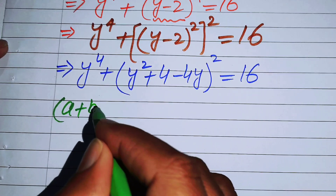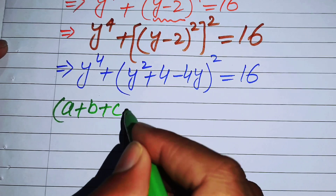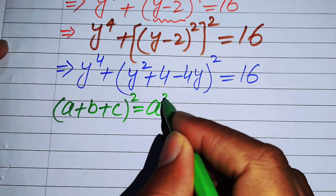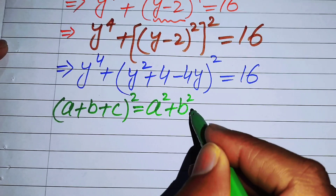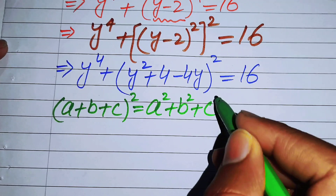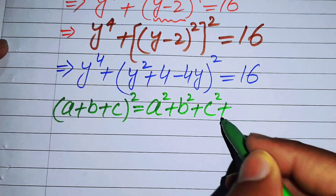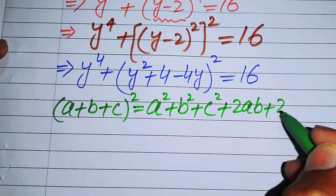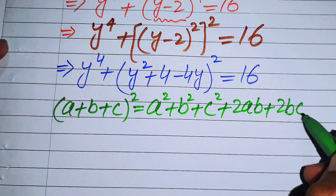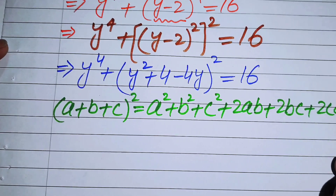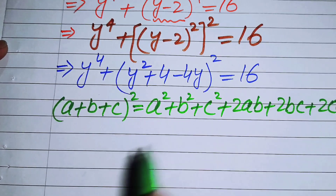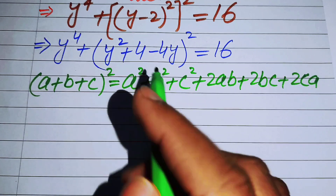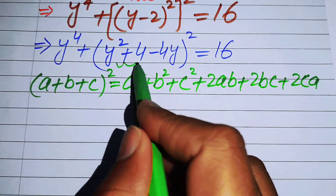The formula for (a + b + c)^2 equals a^2 + b^2 + c^2 + 2ab + 2bc + 2ca. We use this formula on our expression.